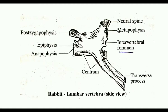The lumbar vertebrae are the largest of all vertebrae in rabbit. The centrum is acoelous, meaning the centrum is flat at both ends.